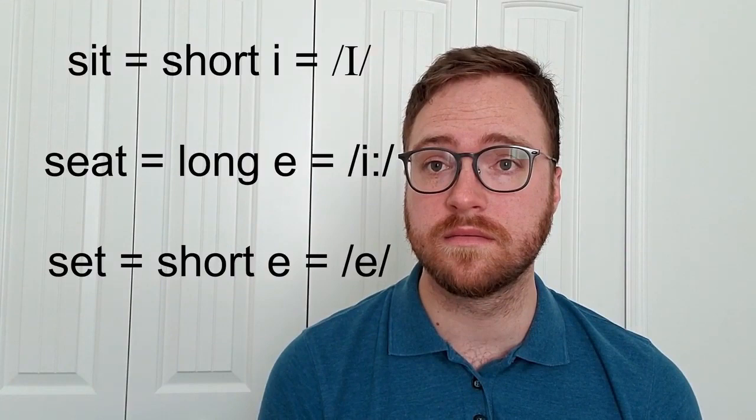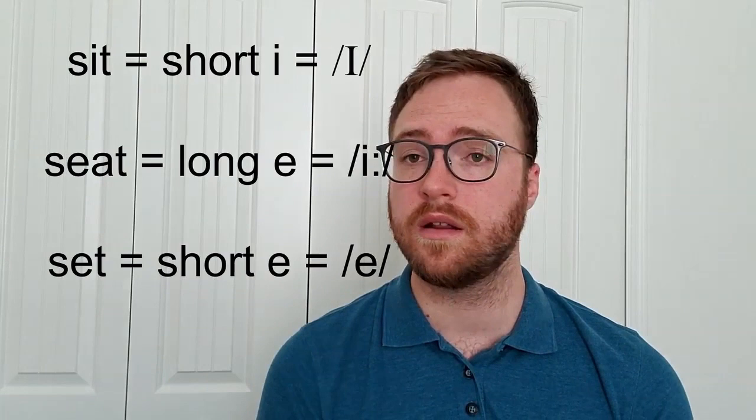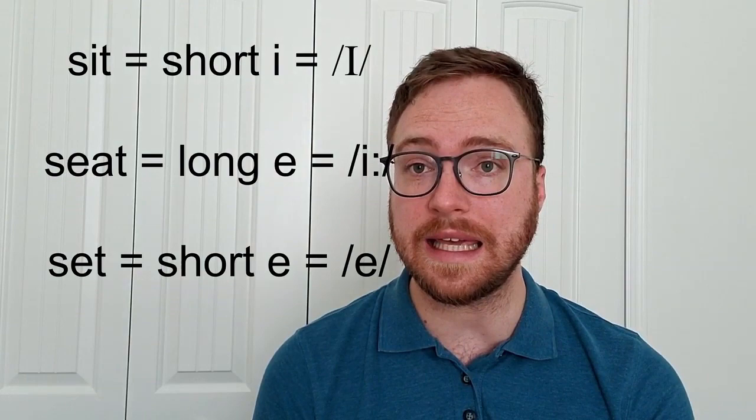Let's listen to these three words so you can hear the difference in each sound: 'sit,' 'seat,' 'set.' The three different vowel sounds in these words are the short I, the long E, and the short E.